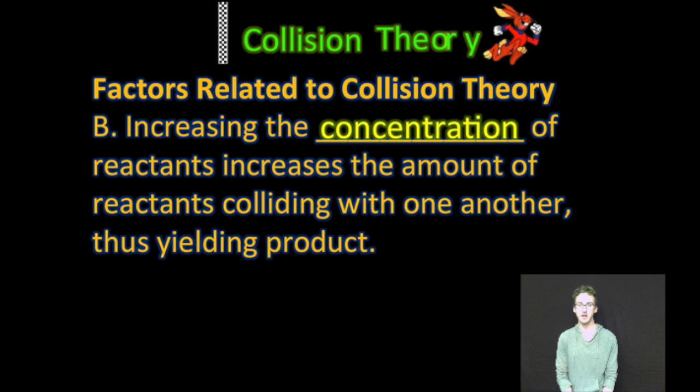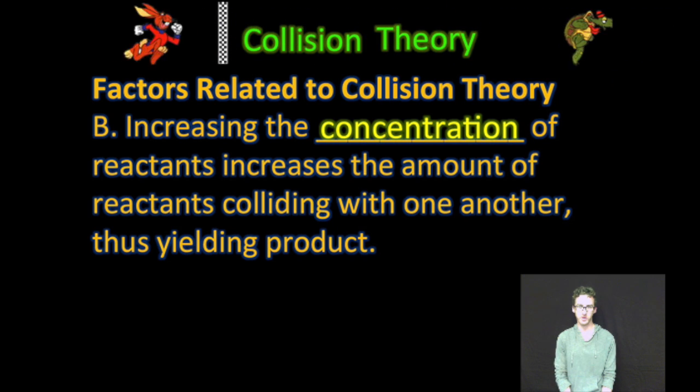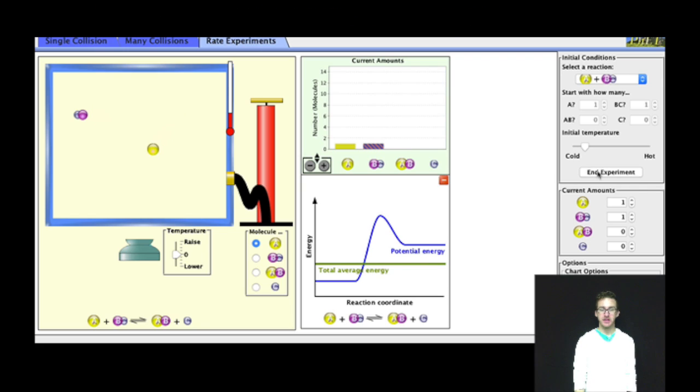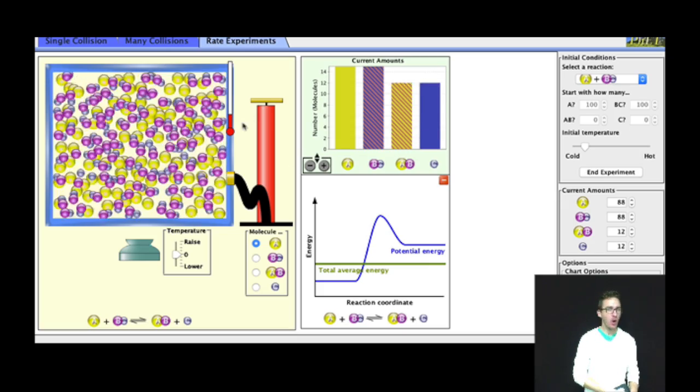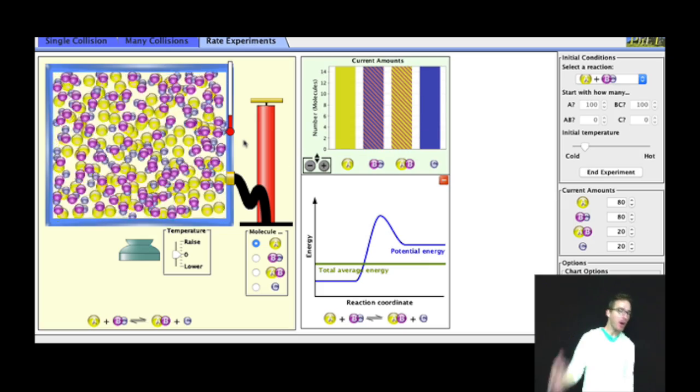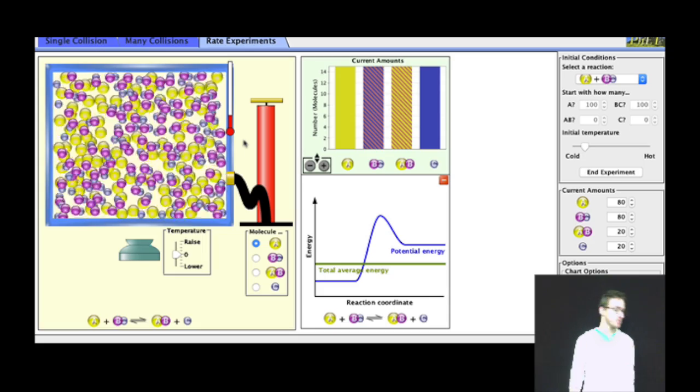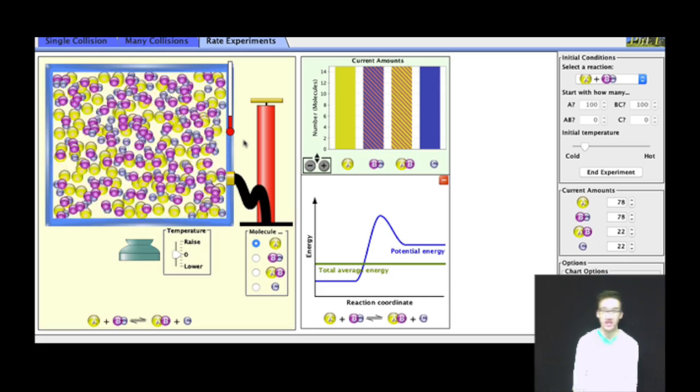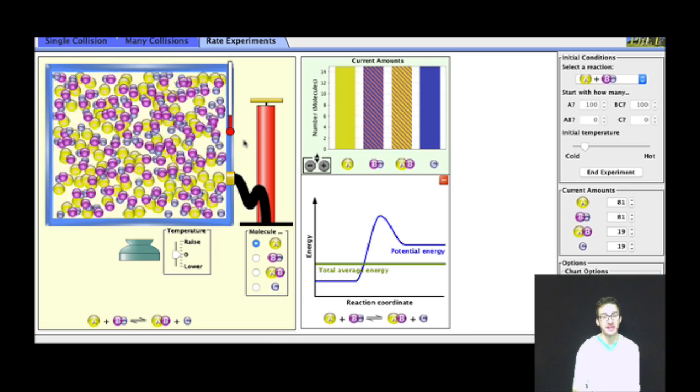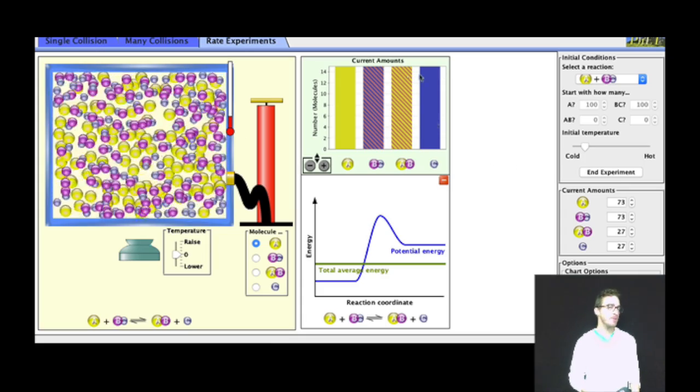Two, increasing the concentration of reactants increases the amount of reactants colliding with one another, thus yielding product more quickly. Let's take a look at this thrilling reaction again. Very low concentrations of my reactants. Not a whole lot of collisions that occur between those two reactants. Therefore the rate of this reaction is very slow. I haven't even formed any product yet. Notice what happens when we bump up the concentrations. Lots more collisions, much greater chance that we're going to have some reactant particles that are colliding with the correct orientation and correct amount of energy. Therefore we're producing more product.